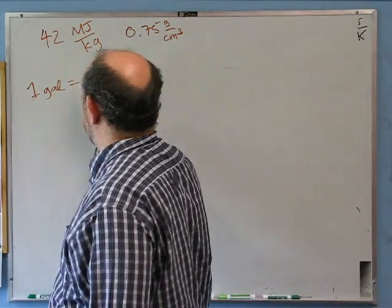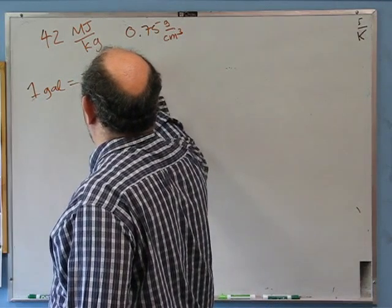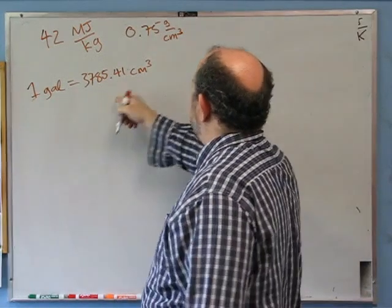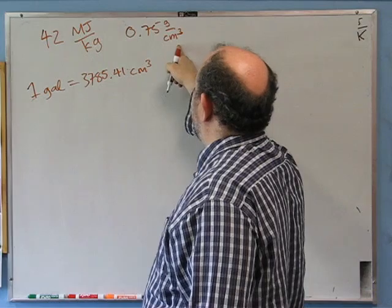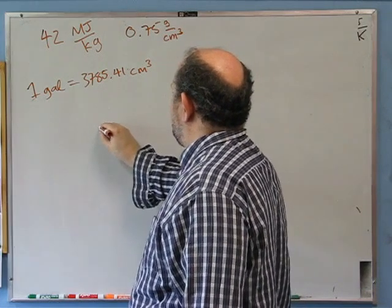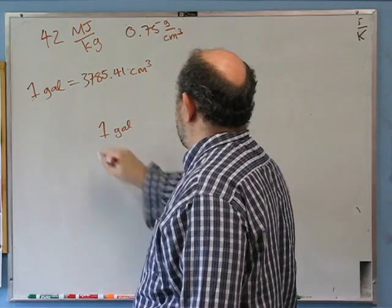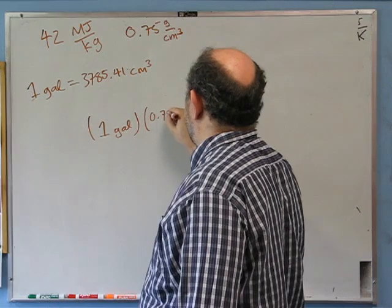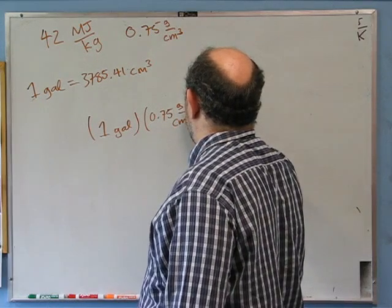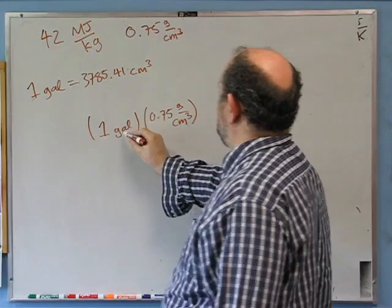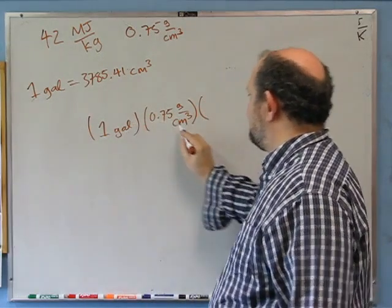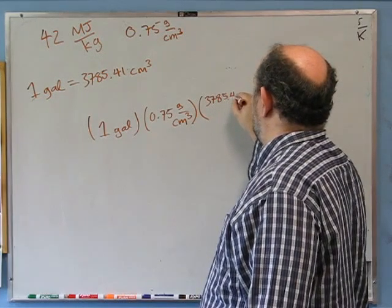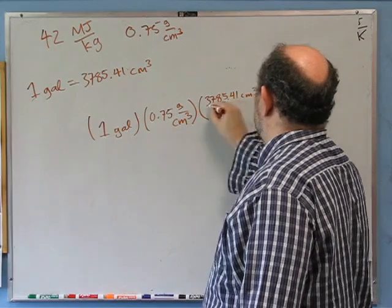One gallon is 3785.41 cubic centimeters. So I can start with a gallon and figure out how many cubic centimeters that is. If I have the volume — one gallon — and multiply it by the density, 0.75 grams per cubic centimeter, I get the mass. I need the unit conversion of 3785.41 cubic centimeters per gallon.